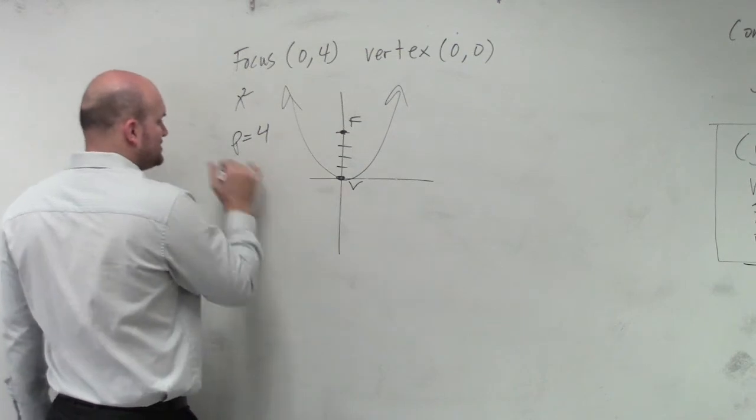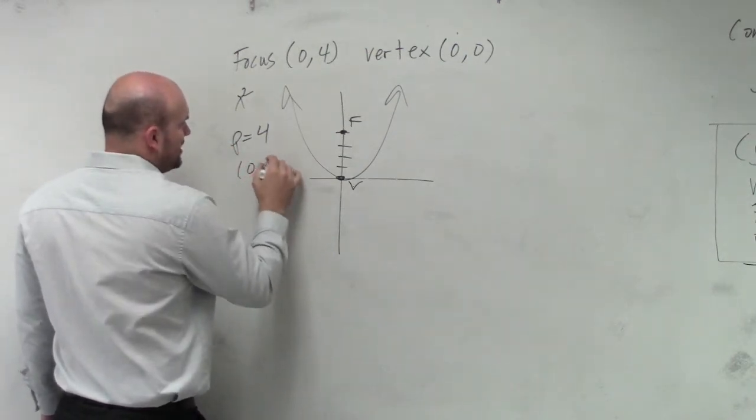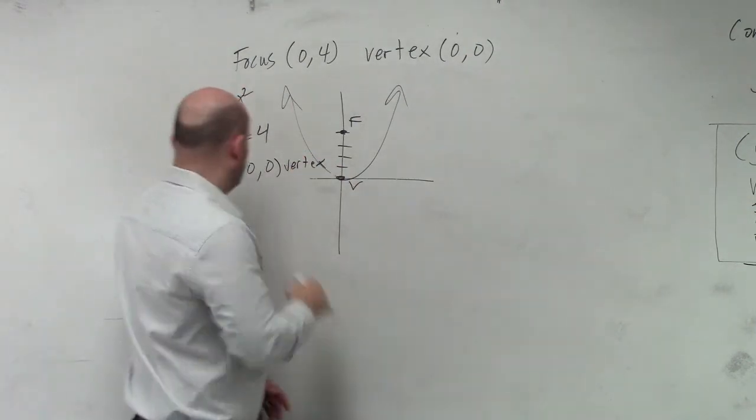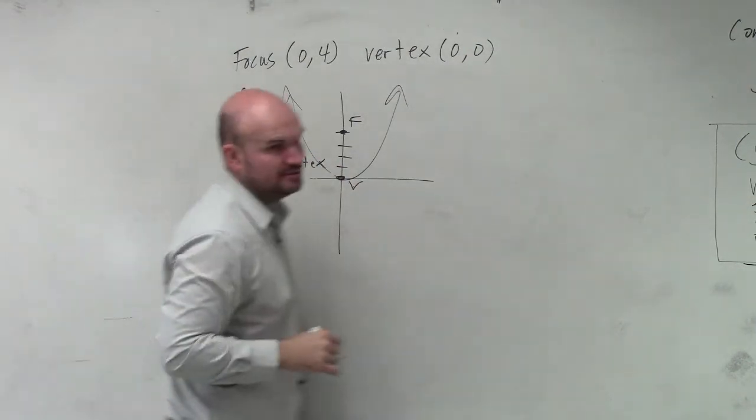And this coordinate point, we can also say that is (0, 0) is my vertex, because that's your h and that's your k. Right?